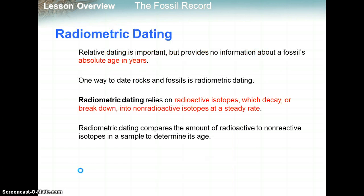Relative dating is important but provides no information about a fossil's absolute age in years — so an exact age. One way to date rocks and fossils is using radiometric dating. This relies on radioactive isotopes, which you'll learn more about next year in chemistry, but they decay or break down into non-reactive isotopes at a steady rate, and each radioactive isotope has a different rate of decay.